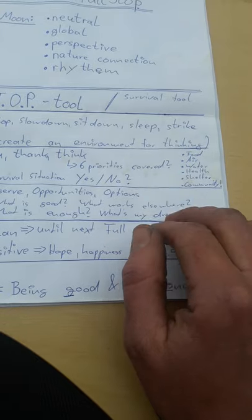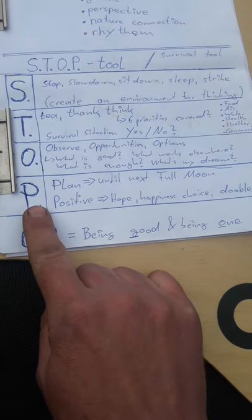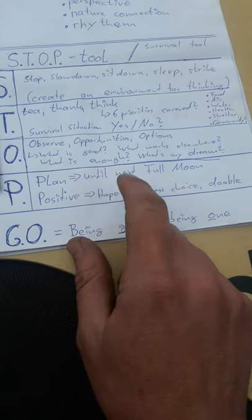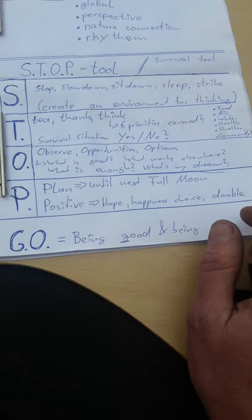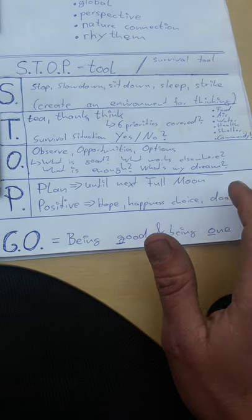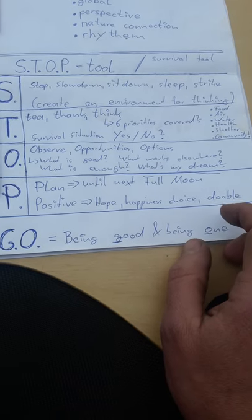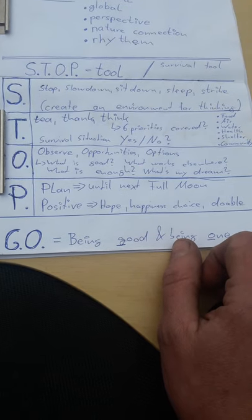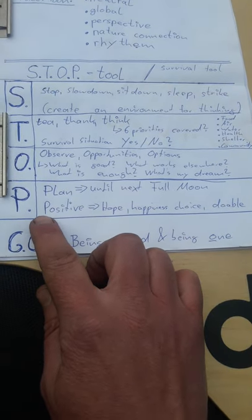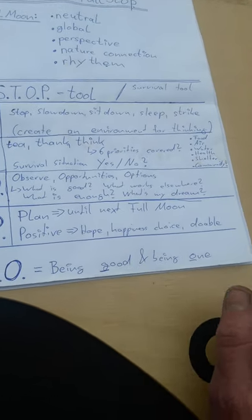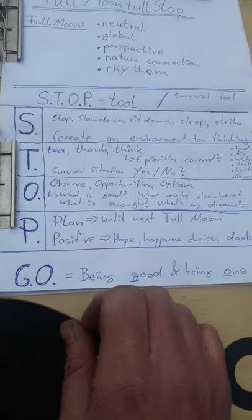Once we've figured out the situation and what opportunities we have, we move on to the letter P — Plan. The idea is to make a doable, potentially doable plan that we execute until the next full moon — just a plan for the next month. This lets us get an overview, plan the weeks in a bit more detail, and look back at the last month to see where we had success. Usually I pick one or two survival priorities to focus on, and community is always one of them.